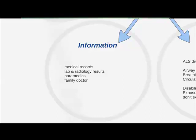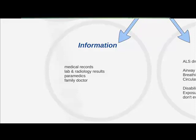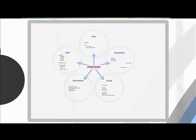Information is something we often forget to gather. You can get it from hospital records — if you have the patient's details, pull their medical record from previous attendances. If you have time, ring their family doctor to find out what medications they're on and their past medical history. The paramedics can also give you extra information before the patient arrives, if they're not too busy doing compressions.